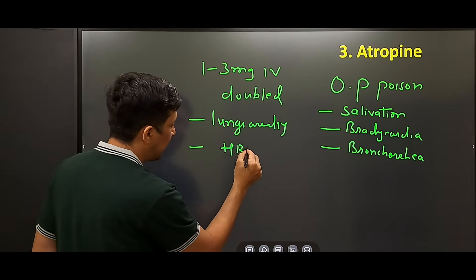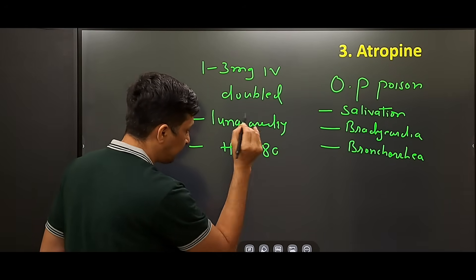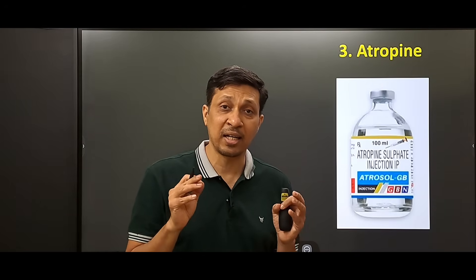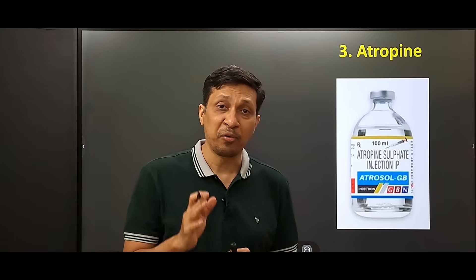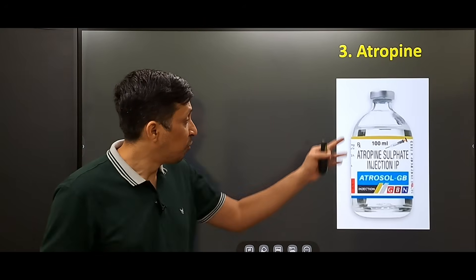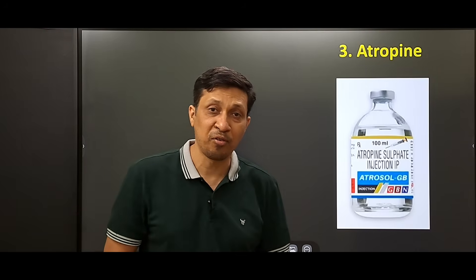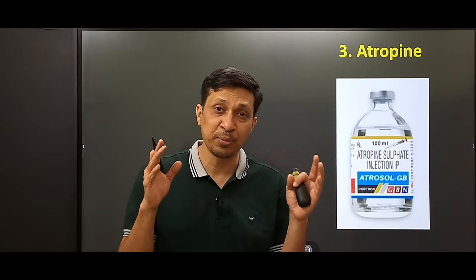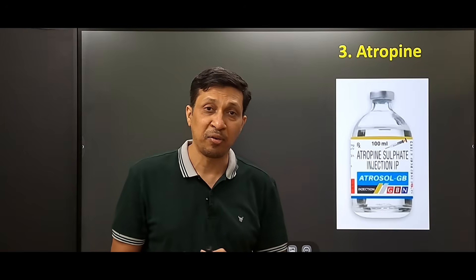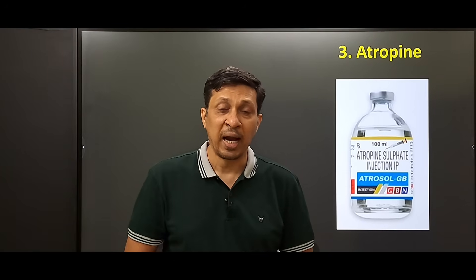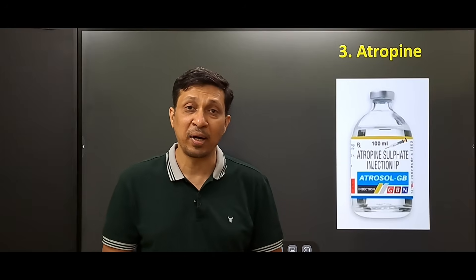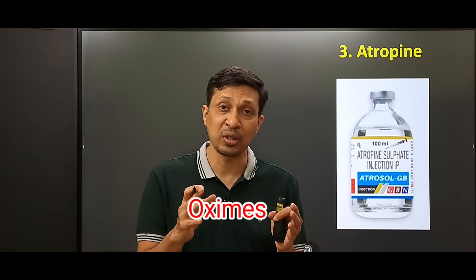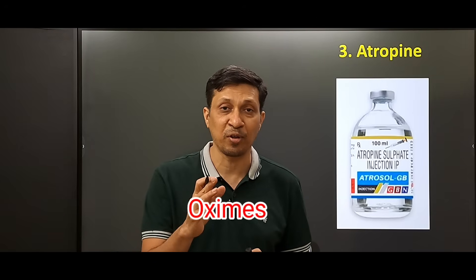Atropine is continued until the heart rate is more than 80. It is available as a 1 ml ampoule, but when treating organophosphorus poisoning a 100 ml vial is very useful because large amounts are needed. Importantly, oximes must also be used as antidotes alongside atropine in organophosphorus poisoning.